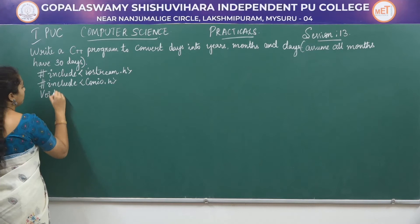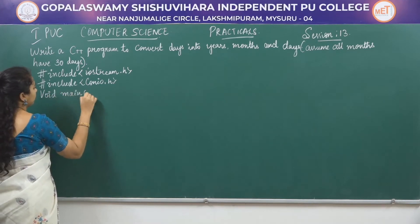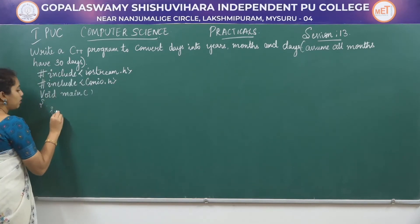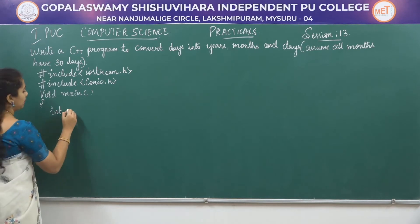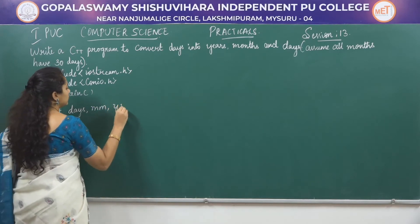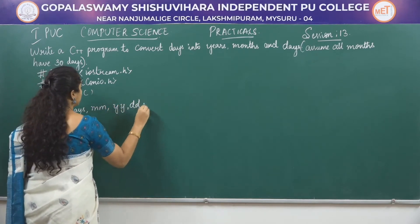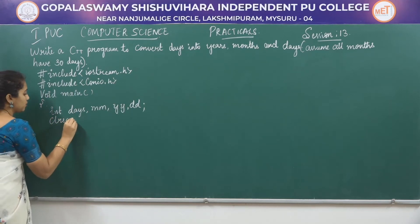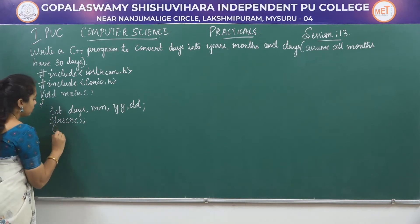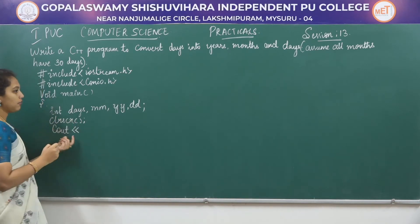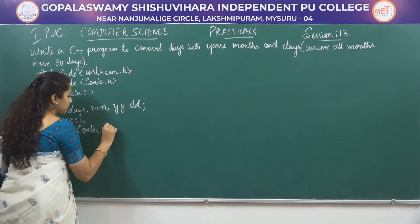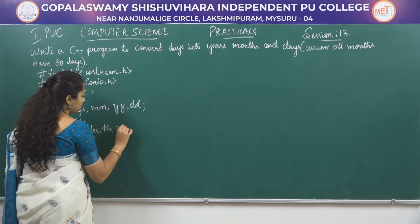In the main function, I am going to declare the required variables of int data type: int days, month, year, and days. The clrscr function is used to clear the previously generated output on the display screen. Using the cout statement with the insertion operator, we are going to prompt the user to enter the number of days.